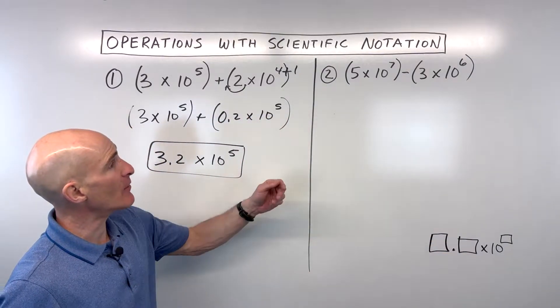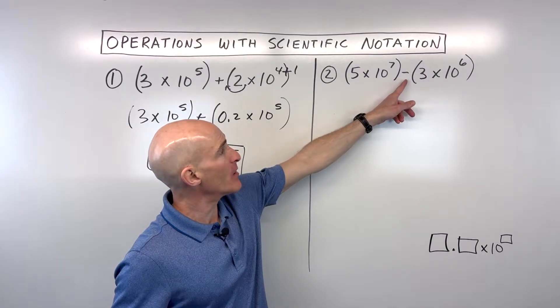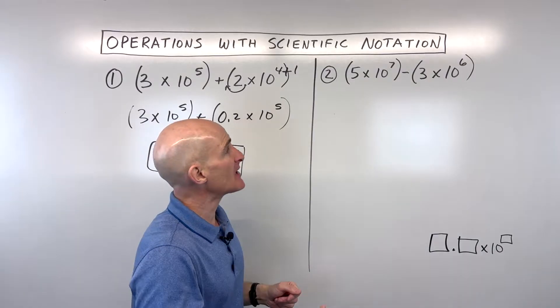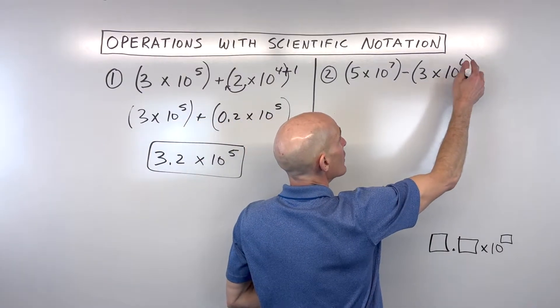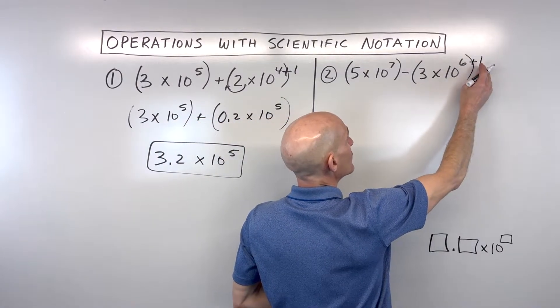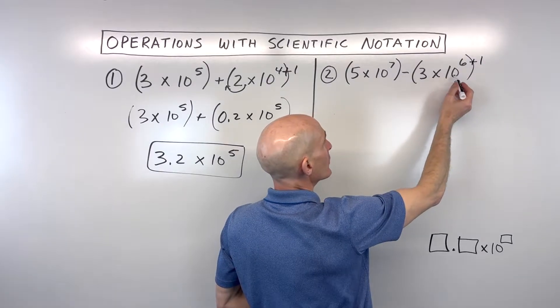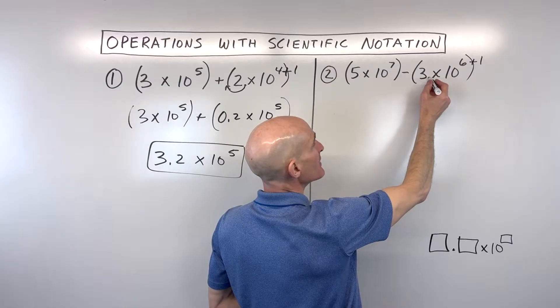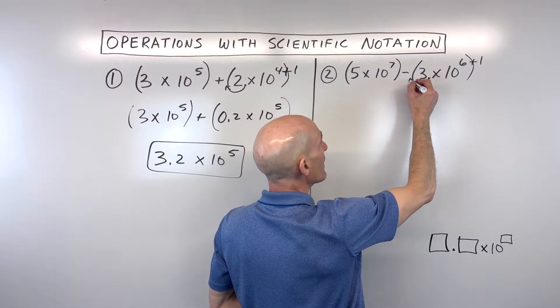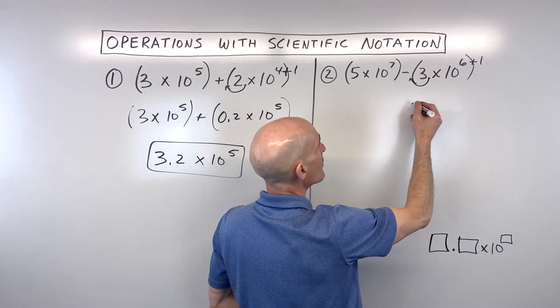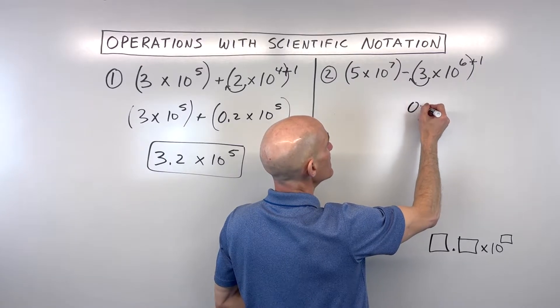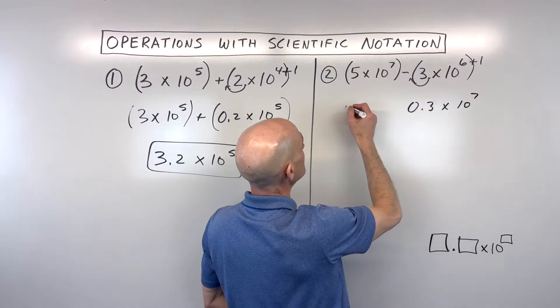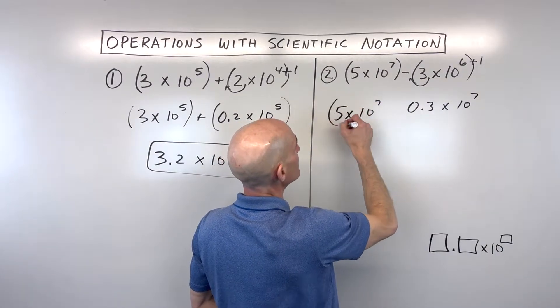Now for number 2, same idea, but here we're subtracting. But notice this is 10 to the 7th, this is 10 to the 6th. So same idea. I'm going to go ahead and make this number larger by a power of 10 by adding 1 to the exponent. But when I make it larger, I don't want to change the value of this number. I have to then make this smaller by a power of 10 by moving that decimal one place to the left. So that's going to become 0.3 times 10 to the 7th. This is 5 times 10 to the 7th.